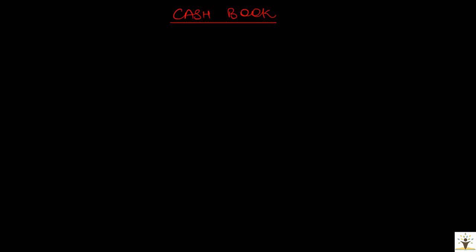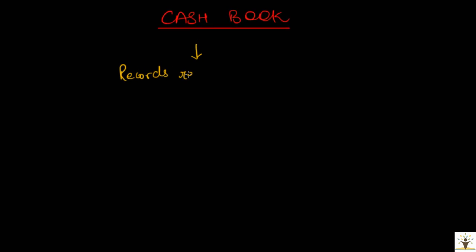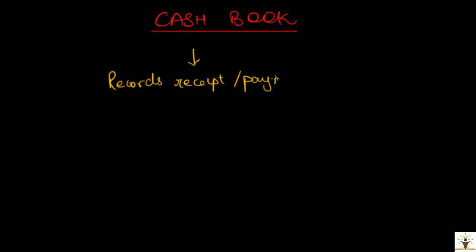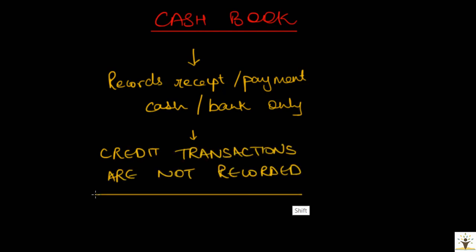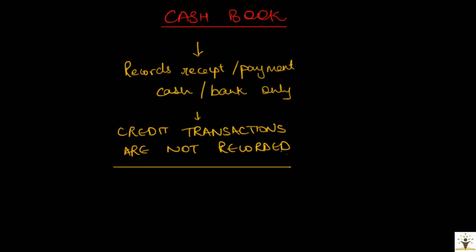Cashbook records only transactions involving cash or bank or both. Hence, credit transactions are never recorded in the cashbook. For example, when goods are purchased on credit, it is not recorded. When goods are sold on credit, again it is not recorded.